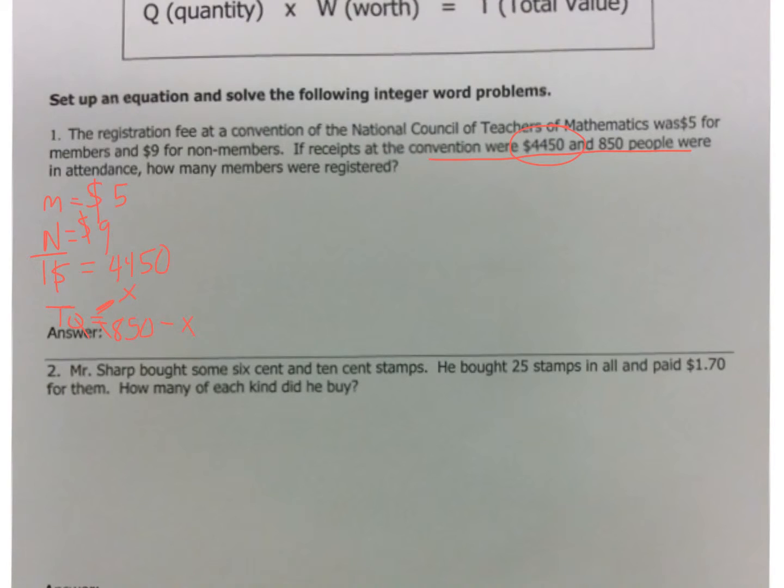When they give you total quantity, one gets X, the other gets the total minus X. So, $850 minus X, because we're going to have to split this between the people who are members and the people who are non-members. So, now that we're set, let's set up our boxes. This will be for members, this is non-members, and this is our total.